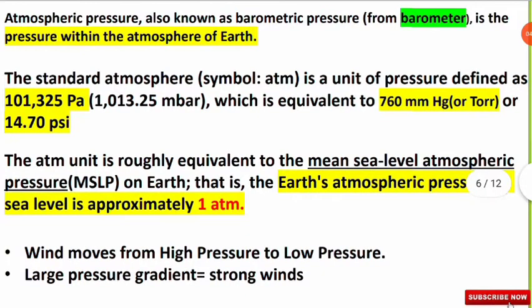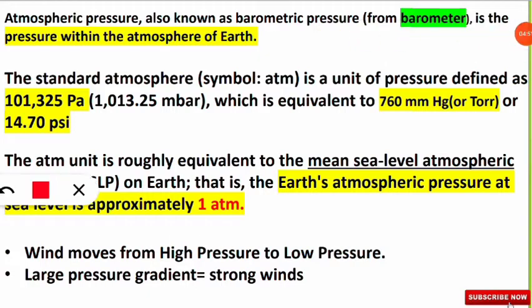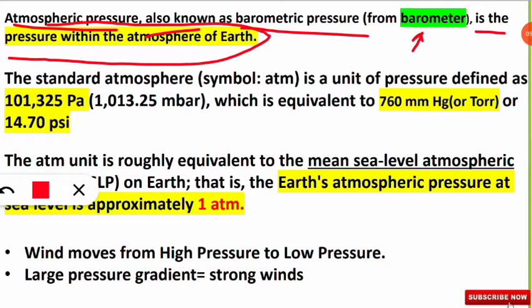Please note down all these important points. If you haven't checked the previous parts, a link is provided in the I-button. Atmospheric pressure is also known as barometric pressure because pressure is measured using an instrument called the barometer. It is the pressure within the atmosphere of the Earth.